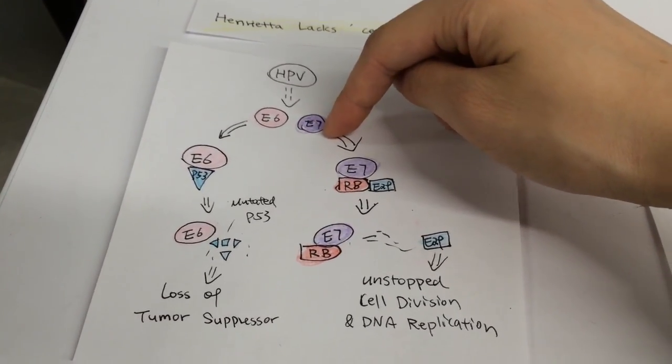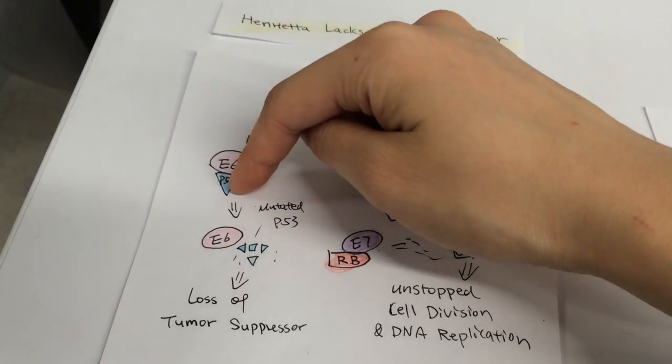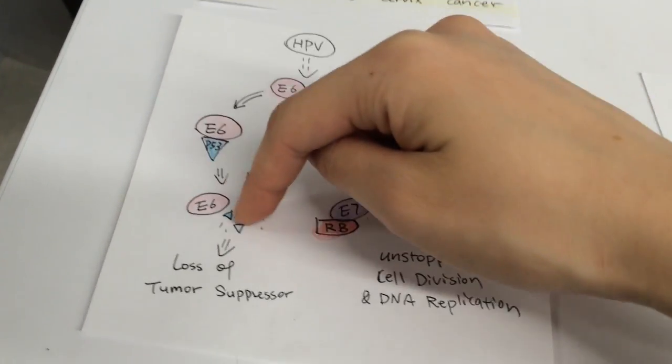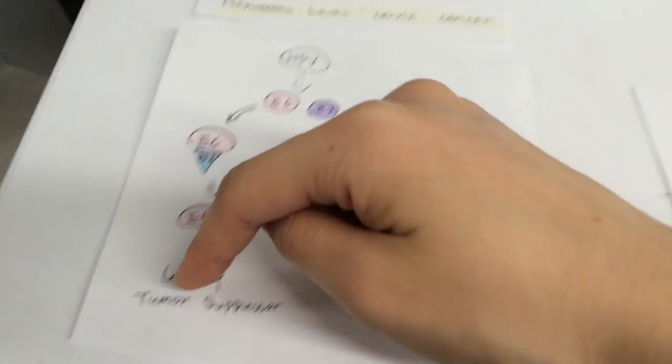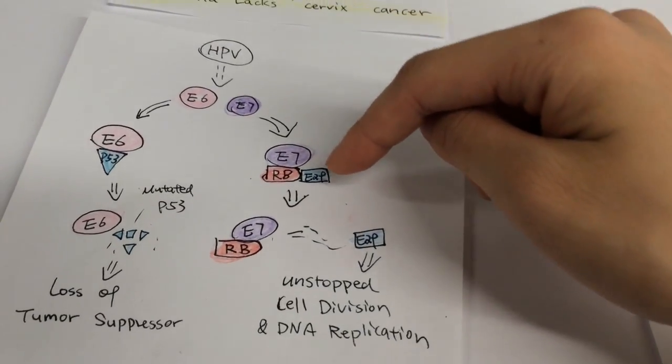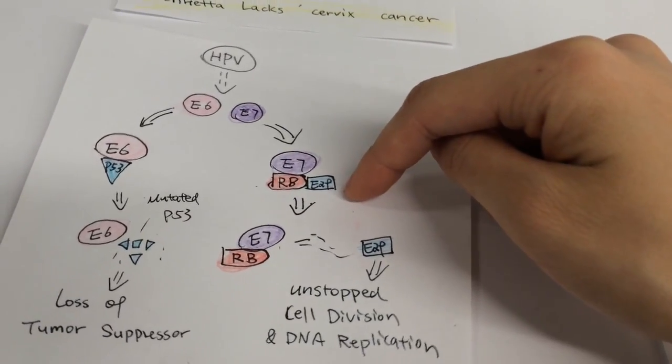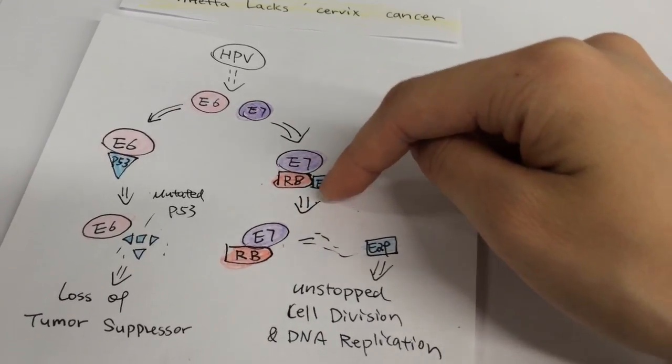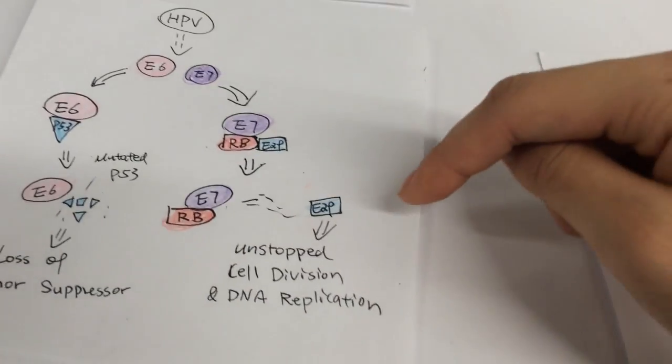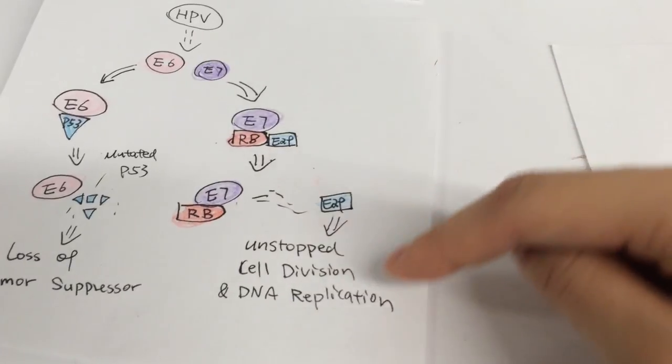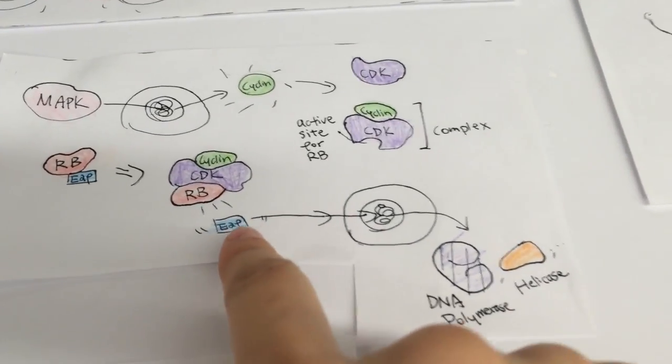E6 causes P53 to become inactive, which disables the brake function of the cell cycle. E7 binds to the tumor suppressor protein RB and cuts off its bond with E2F. This causes the release of E2F and the trigger of cell division even without a signal and the corresponding protein cascade.